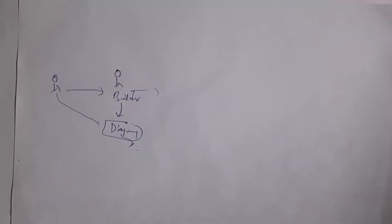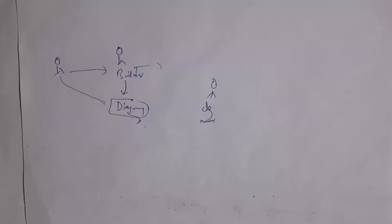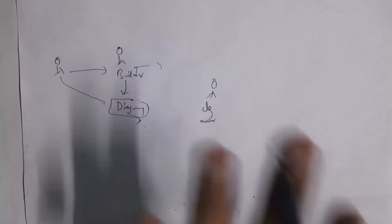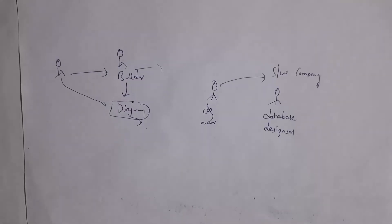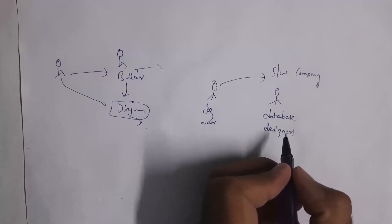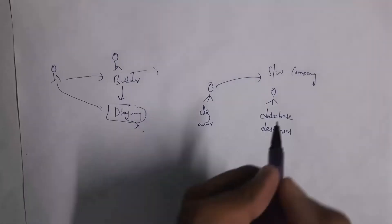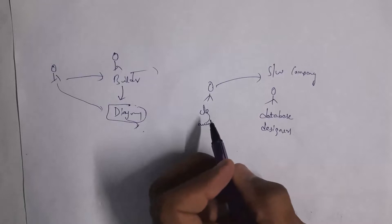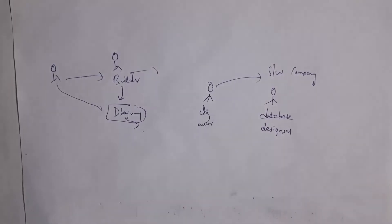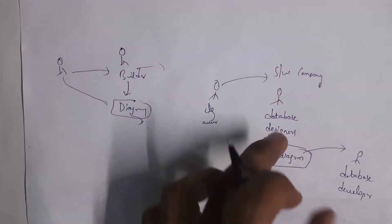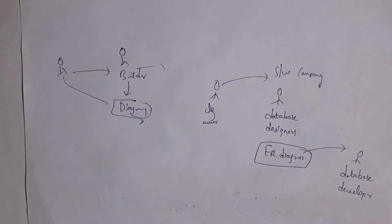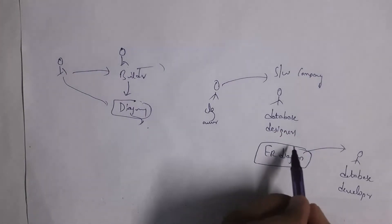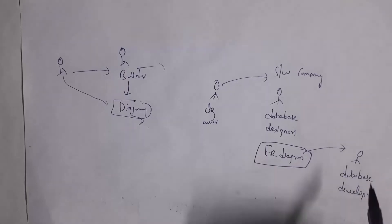In the same way, for example, I am a college owner and I want to construct one database for my college. So I will go to a software company. In each and every software company there will be a database designer. The main duty of this database designer is to draw ER diagrams. So this database designer will collect all my requirements and then design one ER diagram, and submit this ER diagram to the database developer. Then by seeing this ER diagram, the database developer will start developing the actual database.